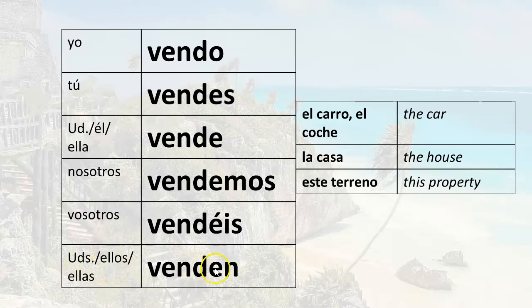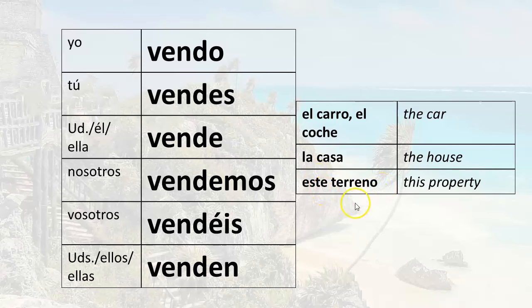The plural you — ustedes venden. You sell the car: ustedes venden el carro, ustedes venden el coche. You sell the house: ustedes venden la casa. You sell this property: ustedes venden este terreno. Finally, they sell: ellos or ellas venden. They sell the car: ellos/ellas venden el carro or el coche. They sell the house: ellos venden la casa, ellas venden la casa. They sell this property: ellos venden este terreno.